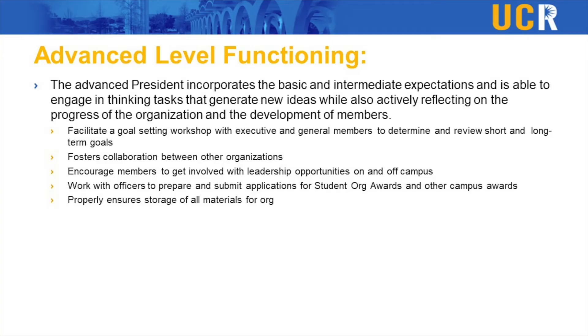Then we get to advanced, which is for groups shooting for the moon. These advanced level things are what you should really be doing to make sure your group is on track. Some examples include facilitating goal setting, making sure your entire group is reviewing and contributing to goals, collaborating with other groups, and encouraging members to get involved with other opportunities. You might also want to apply for org awards or other campus awards, and make sure your materials are safely kept — talking about storage, where you keep things, and who keeps them.